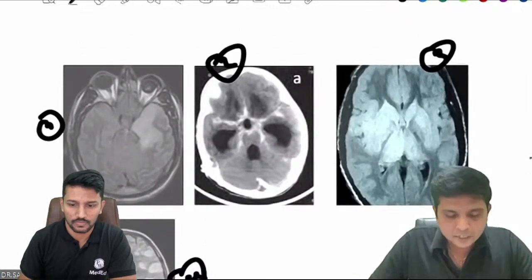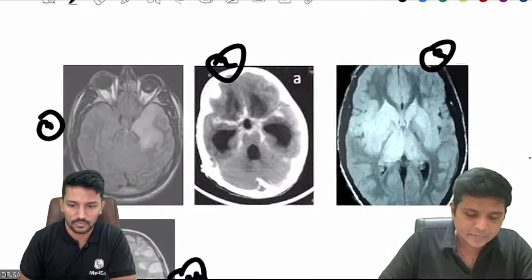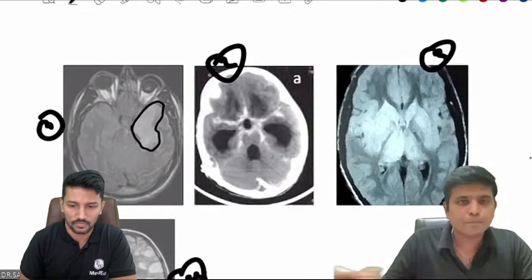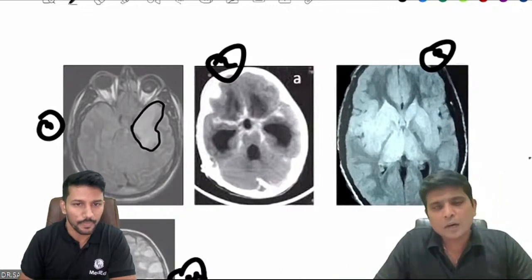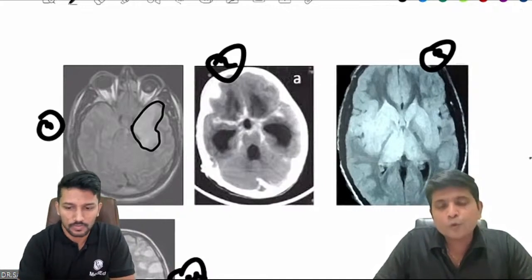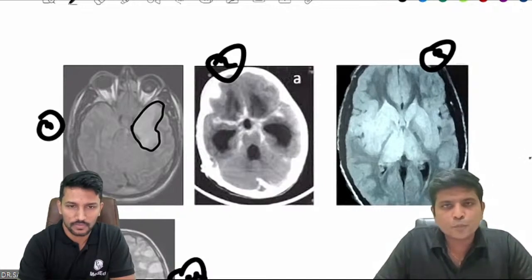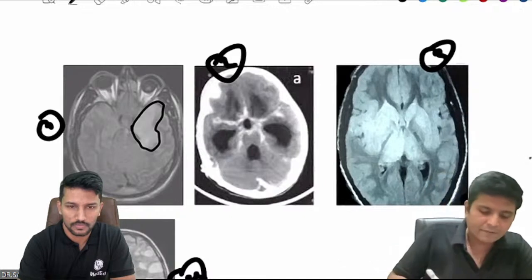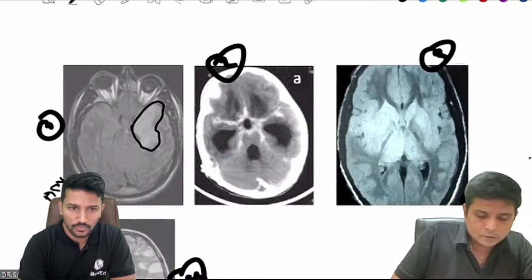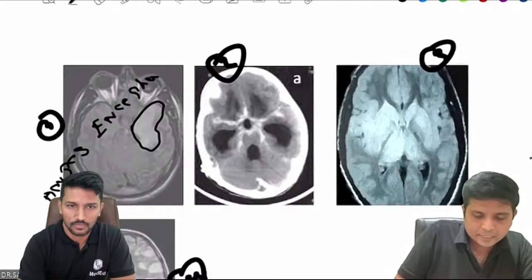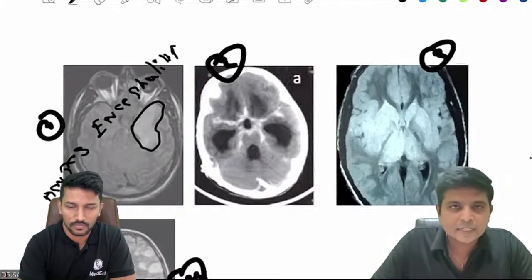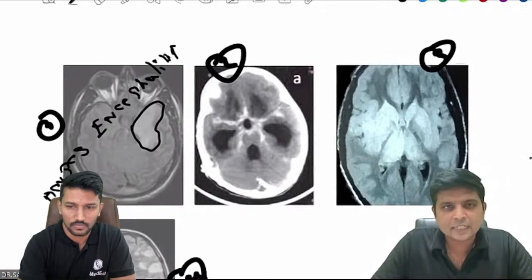In the first image, you can see some hyperintense signals involving the temporal lobe. Whenever you see any case of temporal lobe encephalitis, unless otherwise proved, in the pediatric age group, you are dealing with a case of herpes encephalitis. Temporal lobe encephalitis in the pediatric age group, unless otherwise proved, is herpetic encephalitis.